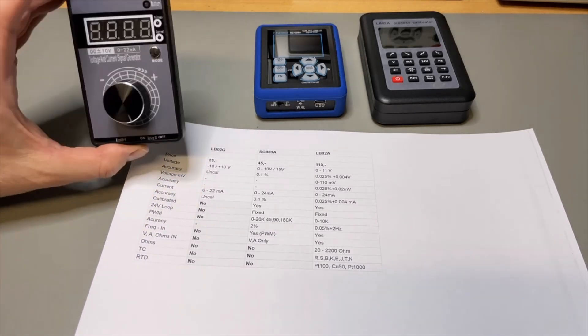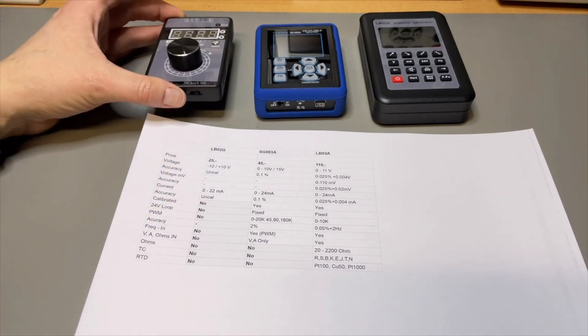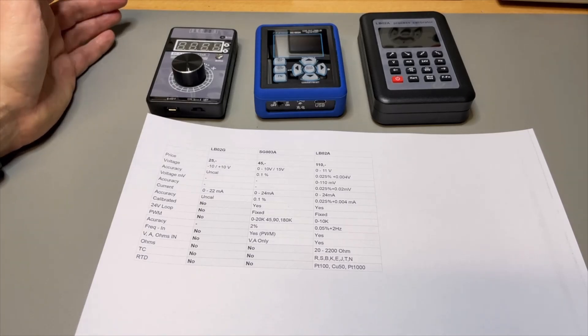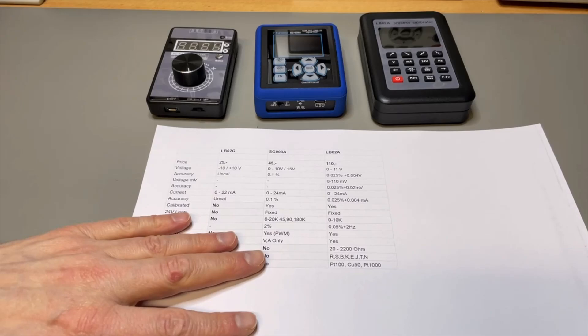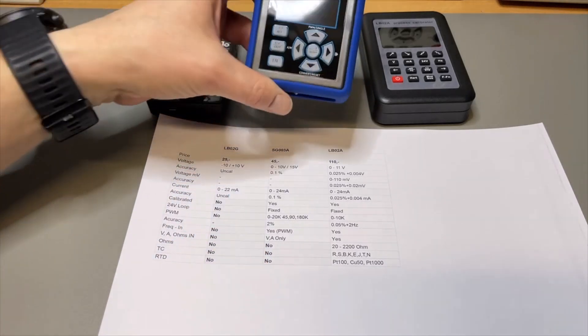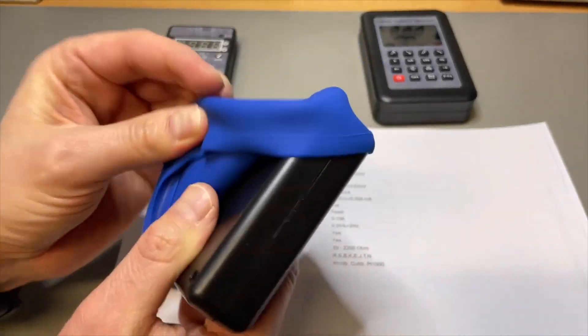If we look at pricing, 25 euros and you can do your voltage and your current but it comes uncalibrated. That's completely useless if you want to use it to calibrate something, but it is a great quick test just to see if your multimeter is working or not, or your process where you actually want to use it in a production environment.